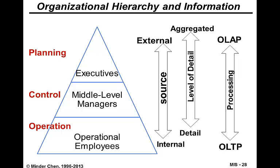Another way to look at information systems in an organization is to look at the organizational hierarchy — from the frontline operational employee to the middle-level manager or business analyst, to the top-level executive and managers. At the bottom, employees tend to focus on operations. At the middle level, people tend to perform the control function. At the executive level, their focus tends to be on strategic planning, etc.